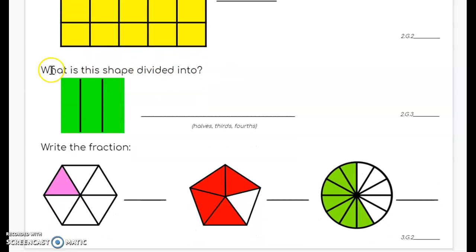For the next section, it says what is this shape divided into? There's a line here for you to write the answer, and down below I have shown you some choices, and you can spell the word correctly.